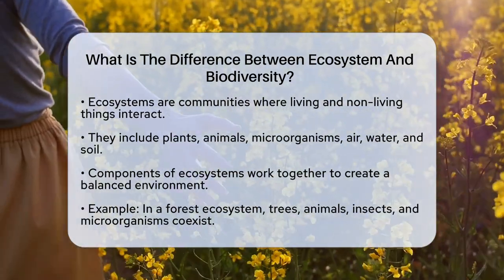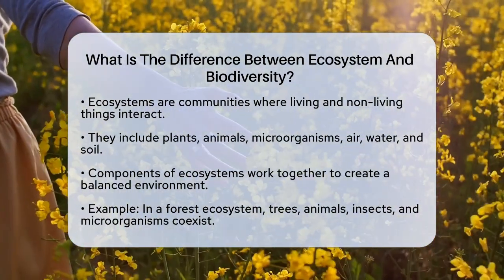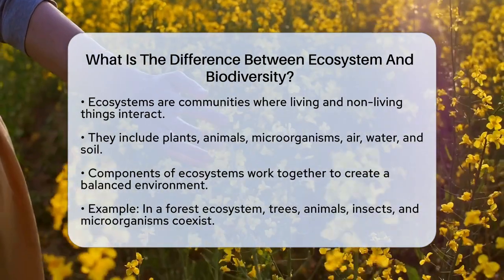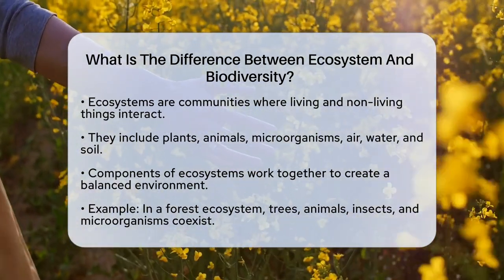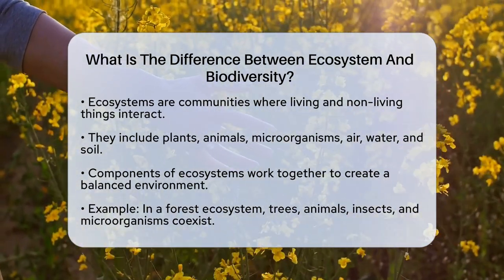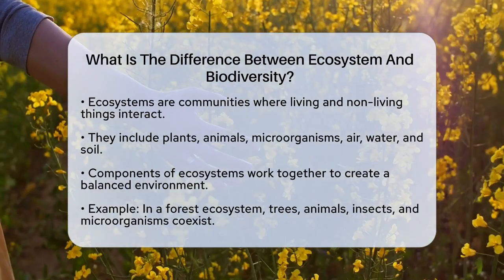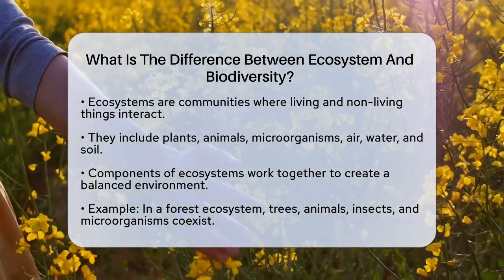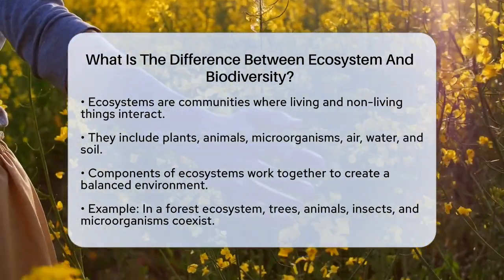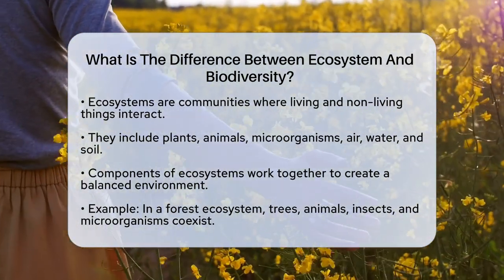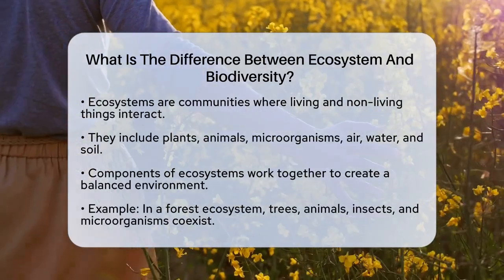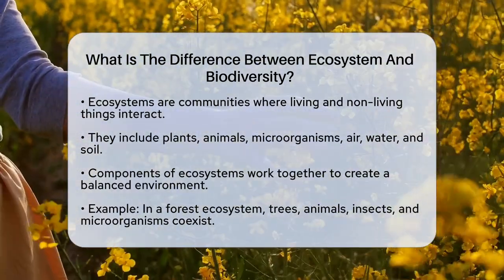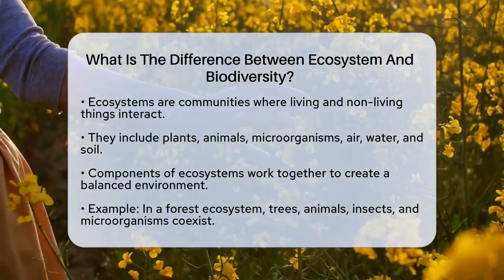First, let's talk about ecosystems. An ecosystem is like a big neighborhood where living and nonliving things interact. It includes plants, animals, microorganisms, and even nonliving elements like air, water, and soil. These components work together to create a balanced environment where everything functions as a unit.